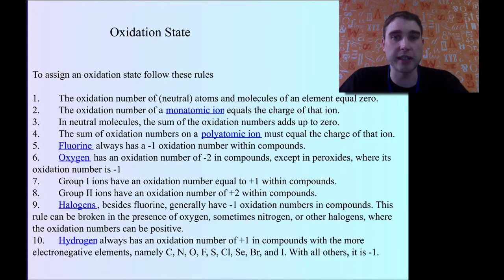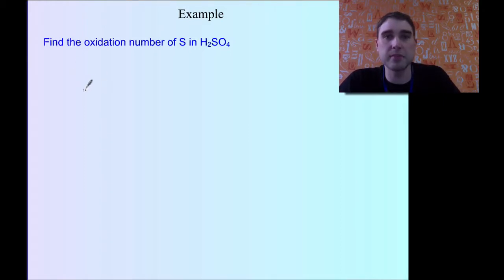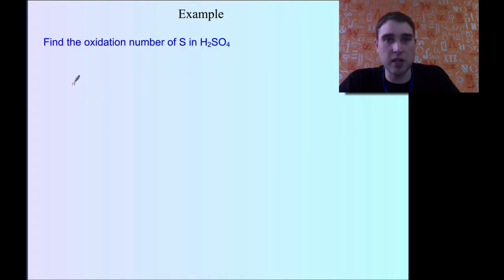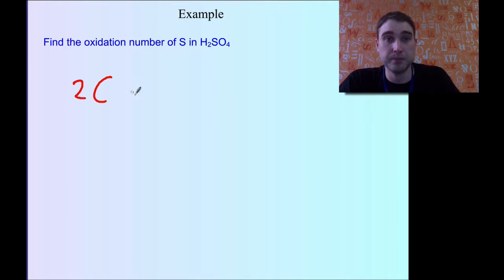Let's look at some examples. Find the oxidation number of sulfur in sulfuric acid. The way to do this is basically year 9 level maths — we're going to call our unknown X. We've got 2 hydrogens and 4 oxygens, and we know their oxidation numbers from the rules. So: 2 times the oxidation number of hydrogen — hydrogen is always plus 1 — so 2 times plus 1, plus 1 sulfur equal to X.